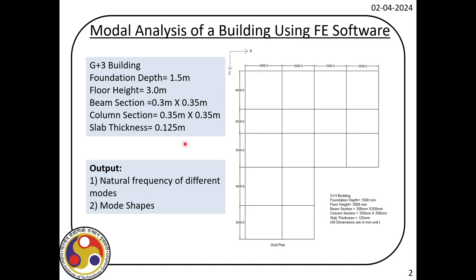Now we will go for modal analysis. This is clearly a multi-degree-of-freedom system and we are going for discrete modeling. Using this software we will develop the mass and stiffness matrix, which we will use in our modal analysis as we did in the MDOF theory discussion. The second task at the output is to plot the mode shapes and see the impact of the asymmetric plan building on the mode shapes.